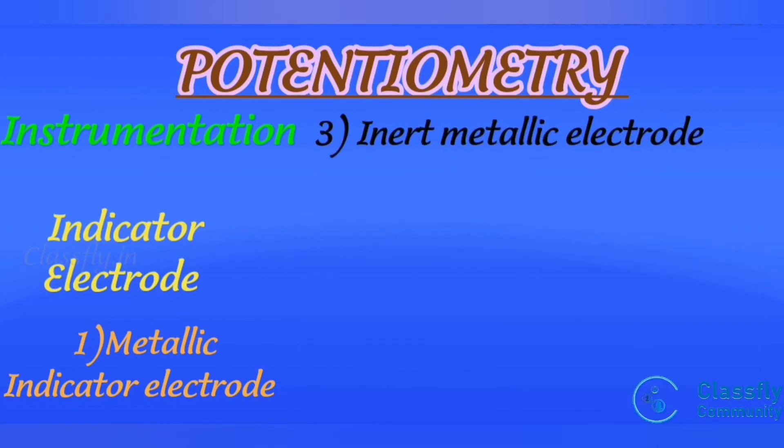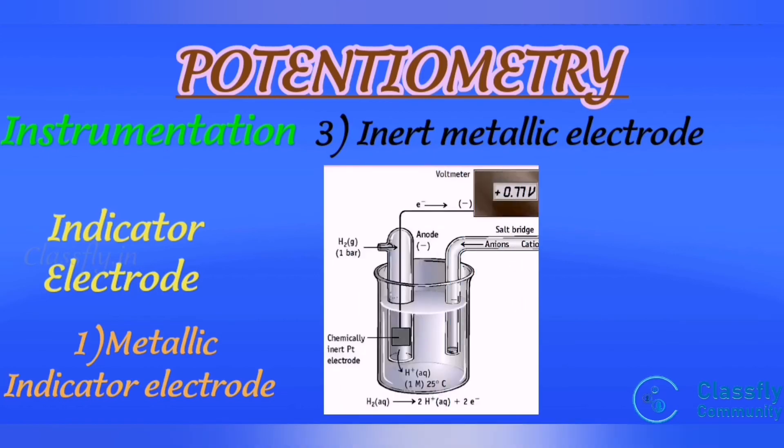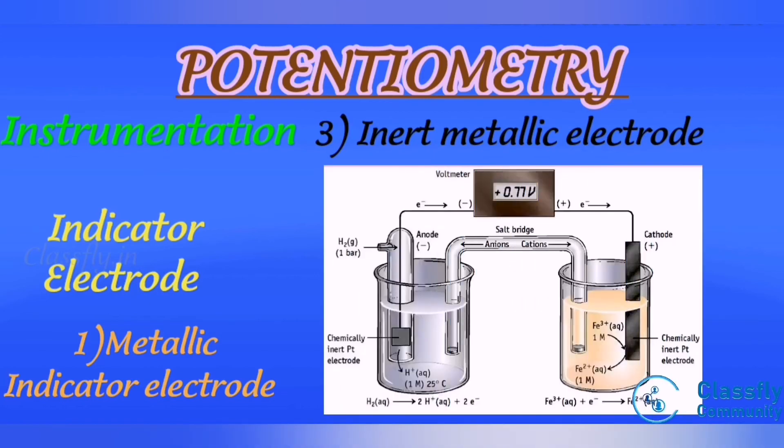Third one is inert metallic or redox electrode. Inert conductors that respond to redox systems. It has an electron source or sink. An inert metal in contact with a solution containing the soluble oxidized and reduced forms of redox half reaction.